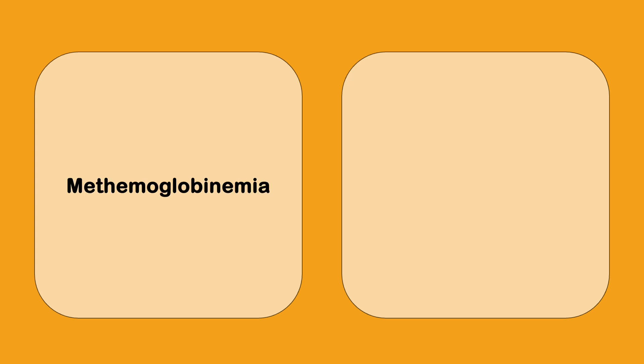Methemoglobinemia, somebody was in a poppers party or had taken nitrite containing drugs or sulfa containing drugs and they come in with shortness of breath. The blood you draw is chocolate brown colored, that is methemoglobinemia. What you do is you use meth for meth, methylene blue. Methylene blue and ascorbic acid which is vitamin C which is found in your paparonex. Methylene blue is contraindicated in G6PD deficiency.